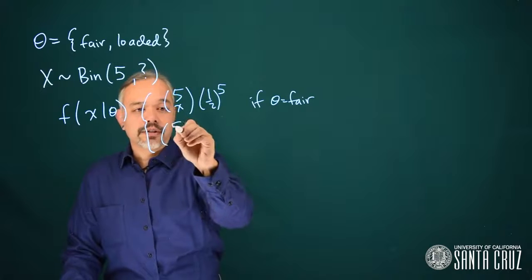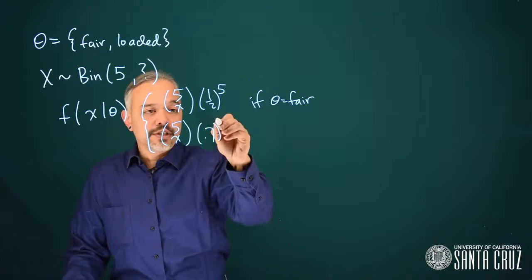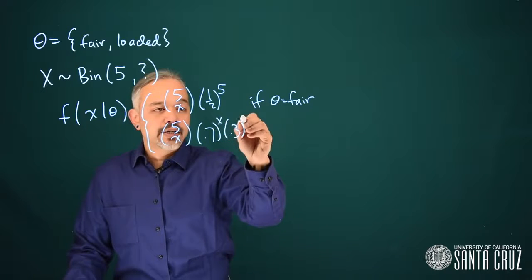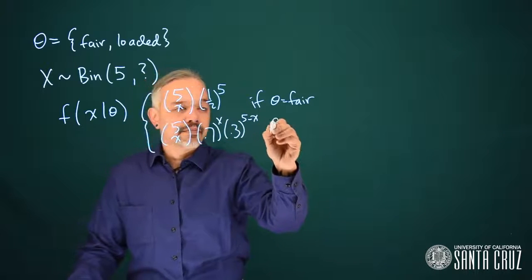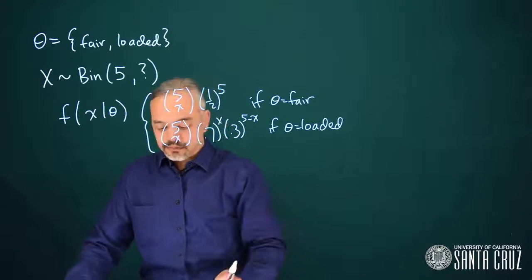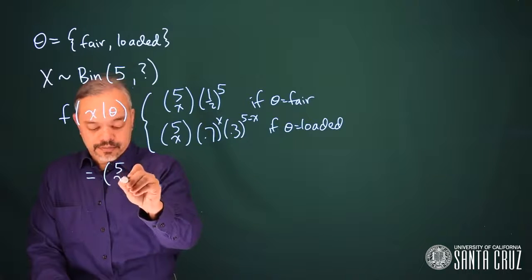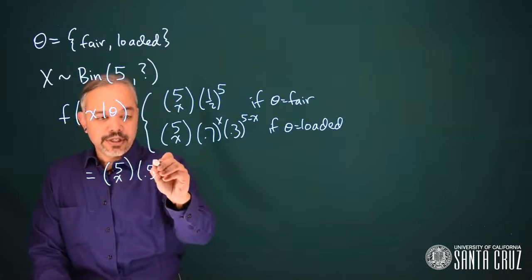If it's the loaded coin, this will be five choose x, point seven to the x, point three to the five minus x. We can rearrange this also to write it with indicator functions.